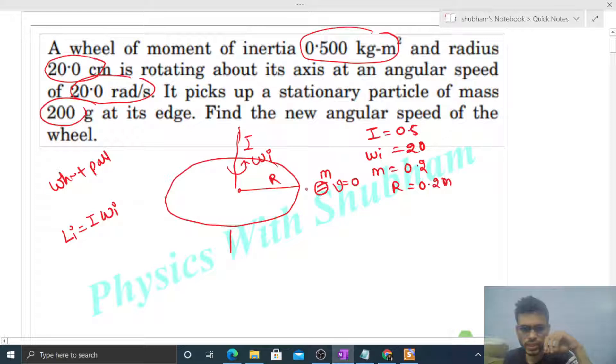Now what happens is this particle sticks to the edge of this wheel somehow. This particle is going to the wheel at the perimeter attached. What will happen? There will be a torque exerted by the wheel on the particle so that the omega, the angular velocity of the particle, can increase. At the same time there will be a torque applied by the particle on the wheel so that its angular velocity will decrease. So internal torque will act between the particle and the wheel.